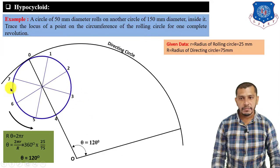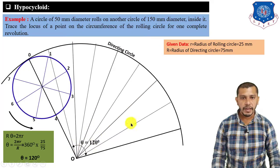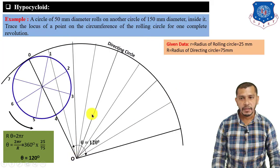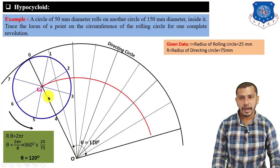As we divided the rolling circle into eight equal parts, divide the θ angle into eight equal parts also, and draw lines from center O. After dividing the 120° angle, mark the center of the circle C0, draw an arc taking center at O with radius equal to O to C0, and mark the final position of the rolling circle.